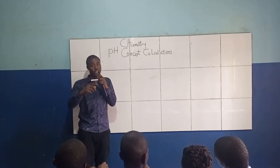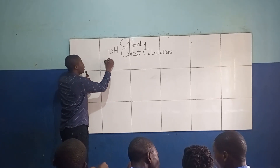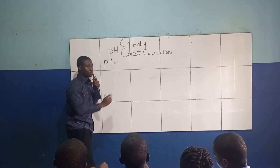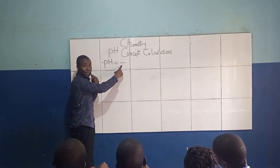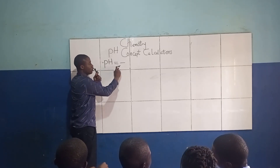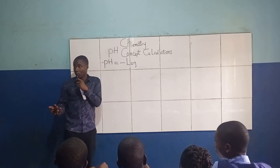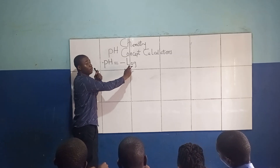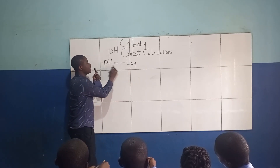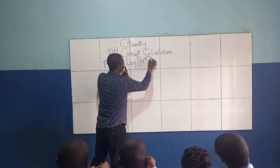We have four important formulas to take note of. The first formula when solving questions on the pH concept is: pH is equal to the negative logarithm to the base 10 of hydrogen ion concentration, written as pH = -log[H⁺].